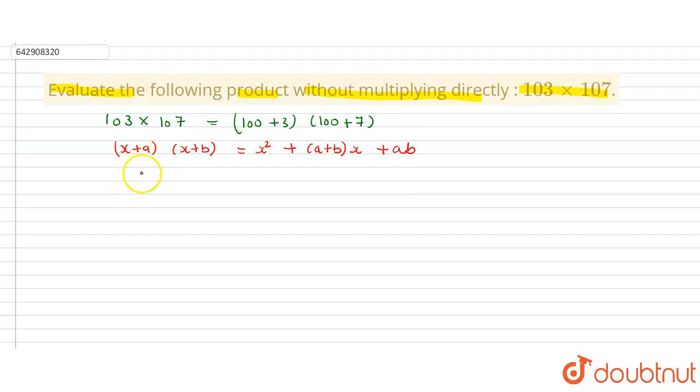In this question, a can be 100. So x's value, x equals 100, and a equals 3 and b equals 7. So a equals 3, b equals 7.